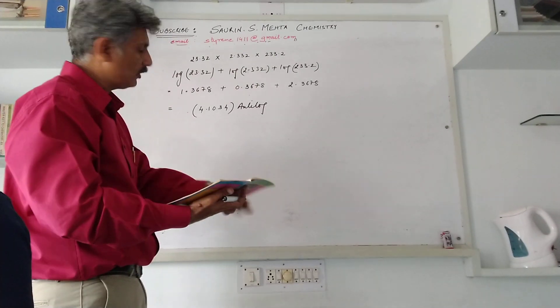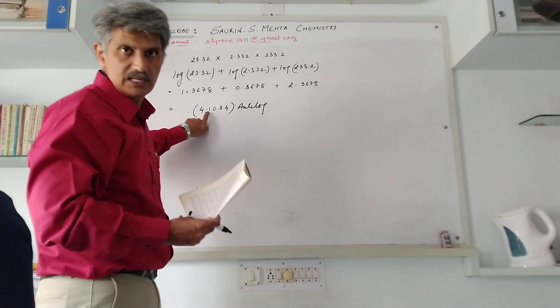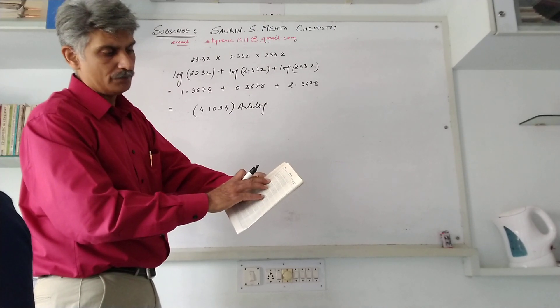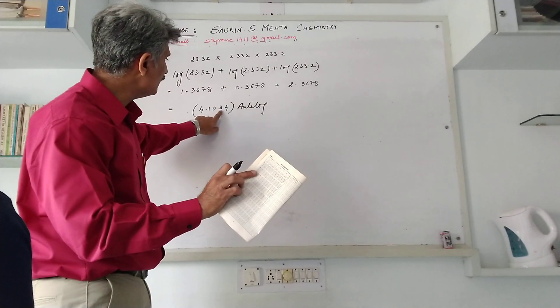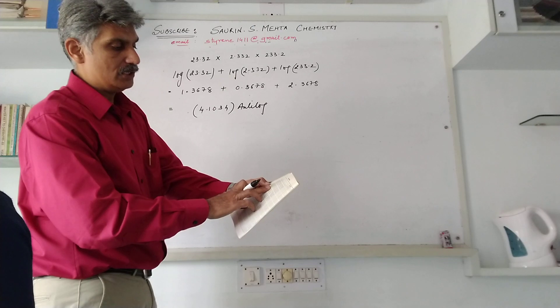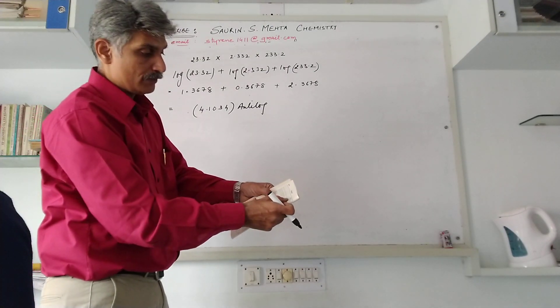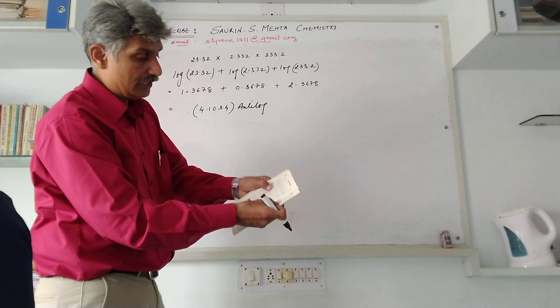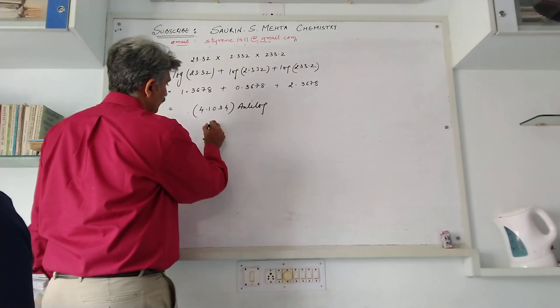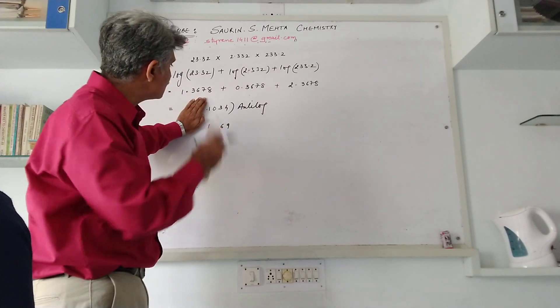In the anti-log table, whatever values are after the decimal, you have to consider. It is decimal point 1, 0. In the table you will have point 1, 0. Place your finger there. Then you have 3, so place it at 3 and slide up to point 1, 0. It is 1268. We have mean difference value 4. From 4 as you slide down, it will be value 1, and that should be added to 1268. So that comes to 1269.